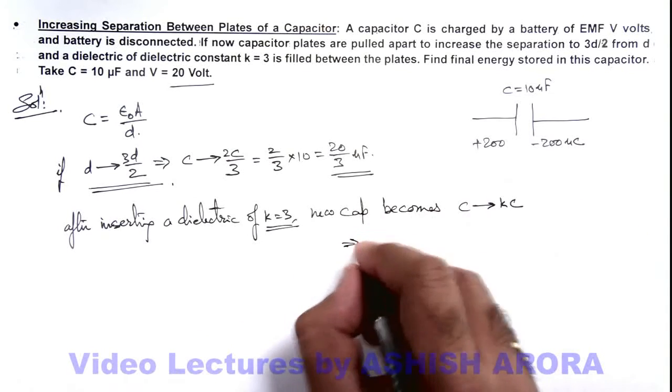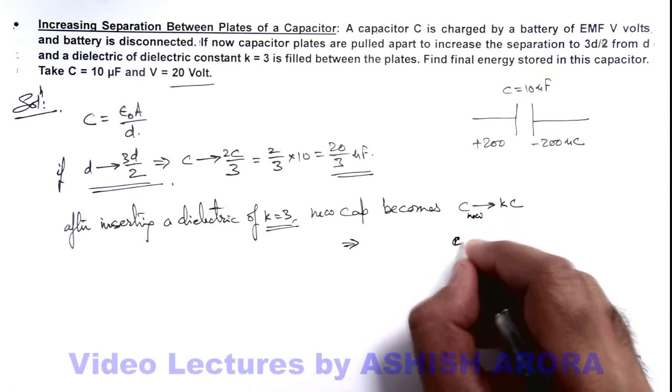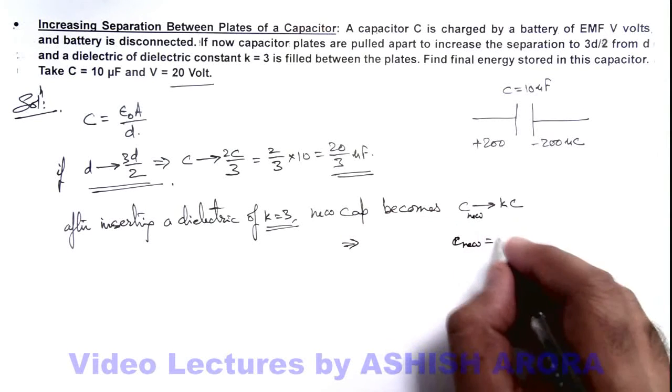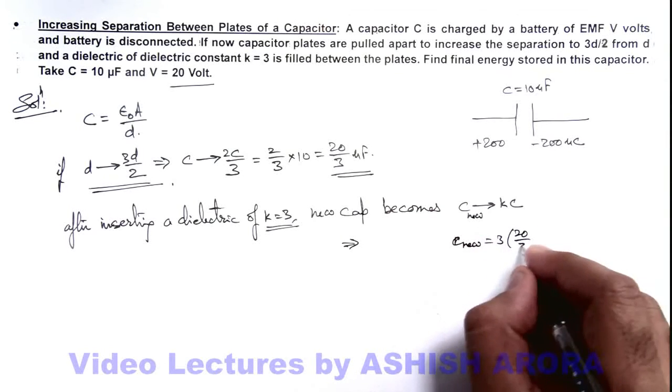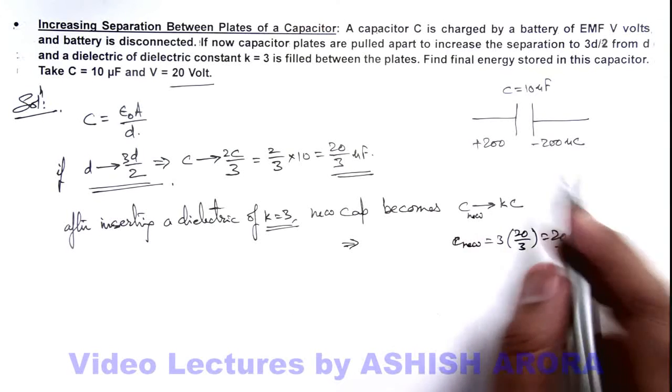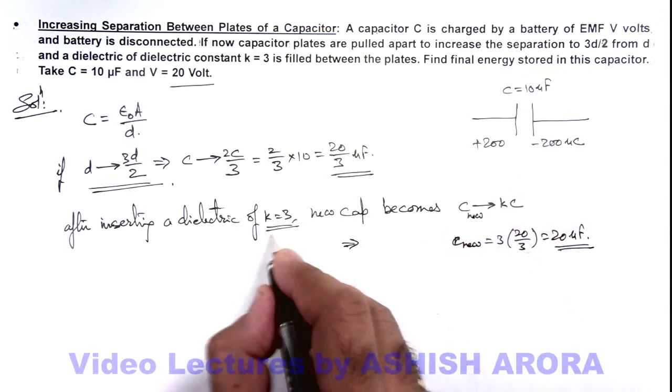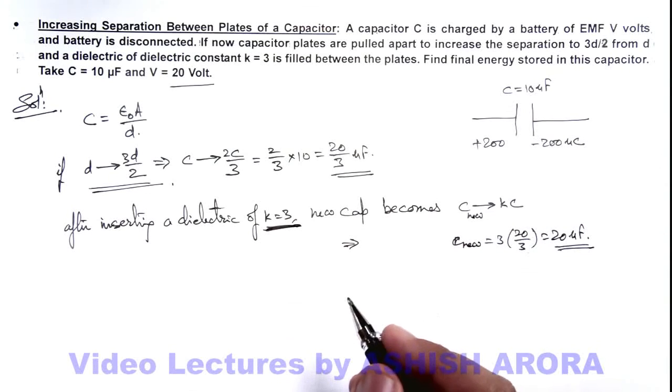This implies here this C new will become k, that is 3 multiplied by 20/3, that is 20 microfarad. This is the final capacitance of this capacitor after increasing the plate separation and filling with the dielectric k equal to 3.